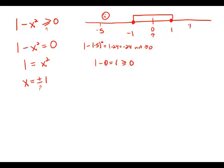Then if I try a number in the right region, say 4: 1 minus 4 squared is 1 minus 16, which is negative 15. That is not greater than or equal to 0, so this region doesn't work. The only region on the number line that works is from negative 1 to 1, including both of those endpoints.